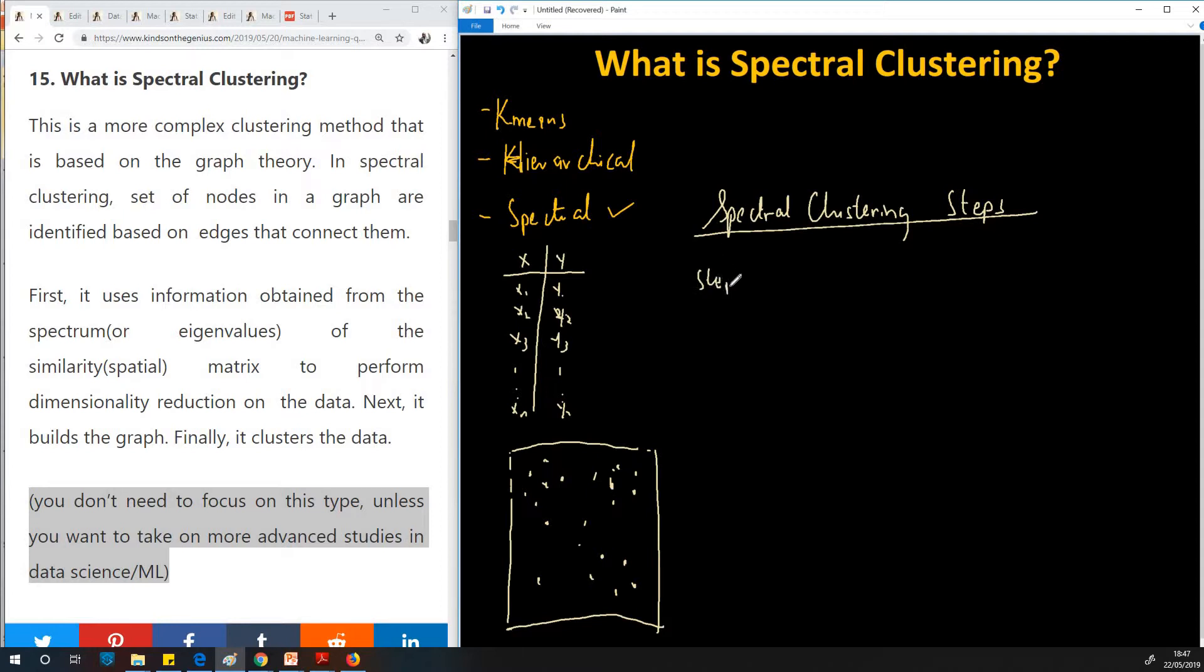So step one, obtain the similarity matrix. So the similarity matrix is a matrix that you obtain when you perform the spatial operation on this data set, you obtain a similarity matrix. Now that is not inside the scope of this particular lesson I'm making.